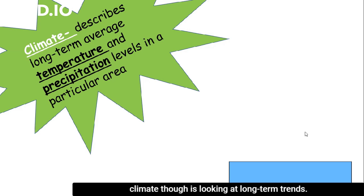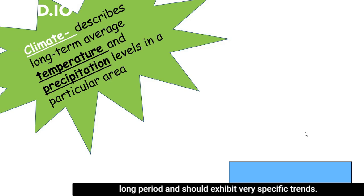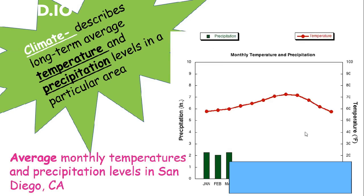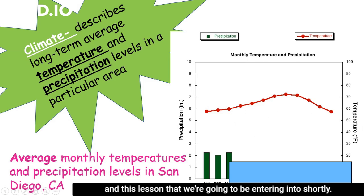Climate, though, looks at long-term trends — what conditions are like on average — examining long-term temperature and precipitation levels in a particular area. It can be measured over a year-long or several-year period, and it should exhibit very specific trends. We're going to be talking about these types of graphs — climatographs — in this lesson.